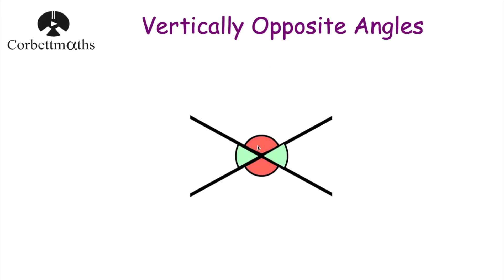As you can see in this diagram, we've got two acute angles shown in green, and they would be equal to each other. And we've got two obtuse angles shown in red, and they would be equal to each other. So if we've got two straight lines that cross, the opposite angles are always equal to each other, and they're called vertically opposite angles.